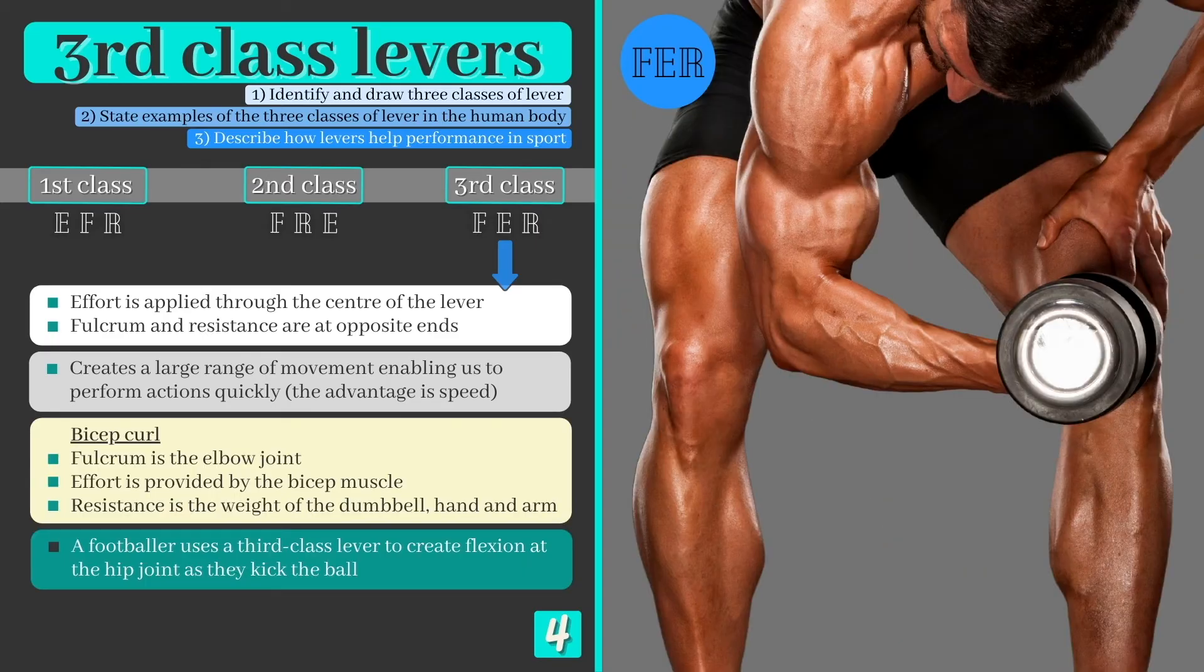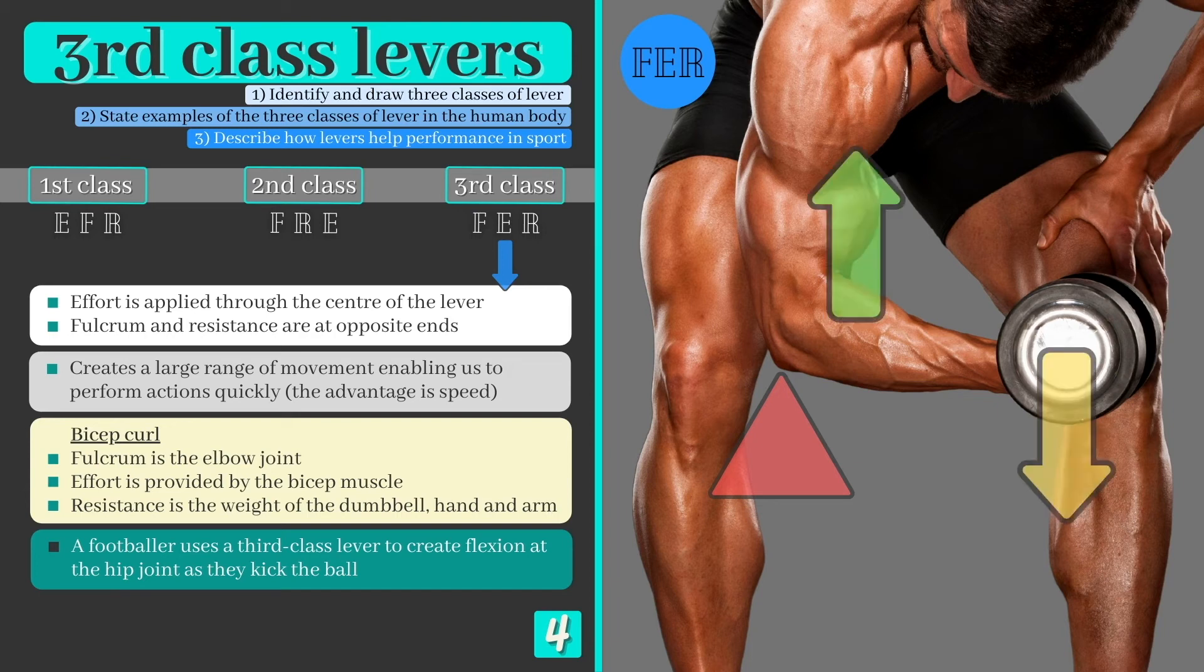When performing a bicep curl, the elbow takes on the role of the fulcrum, the bicep provides the effort by pulling on the forearm, while the weight of the dumbbell, hand and arm provide a resistance to work against.